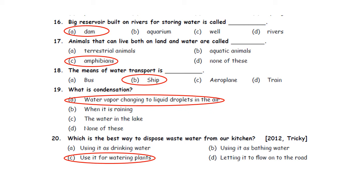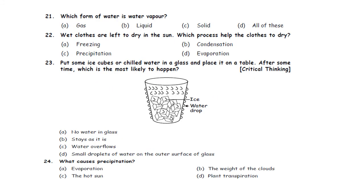Don't waste water, my dear kids. Question 21: Which form of water is water vapour? A. Gas. B. Liquid. C. Solid. D. All of these. The gaseous form of water is water vapour. So the answer is option A.